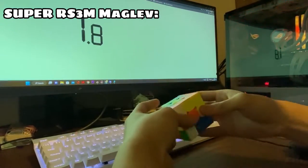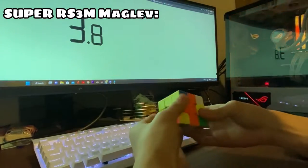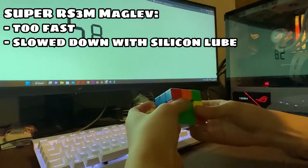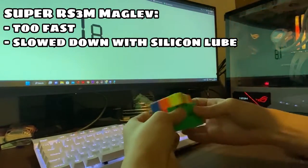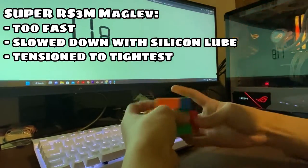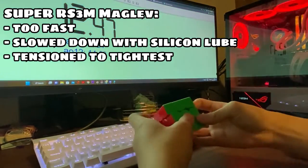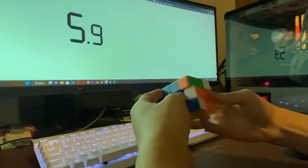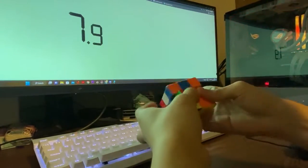So I did some solves for the cube. I find the cube a bit too fast. So I slowed it down with some Lubus Pro. And also, I tensioned the settings to the tightest setting. And now the cube feels a lot smoother and controllable. I also think that the magnets are really strong as well. They really make the cube more controllable.